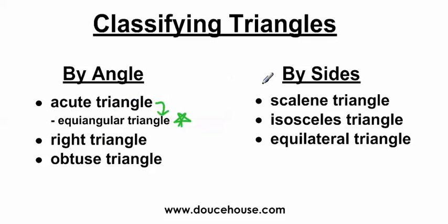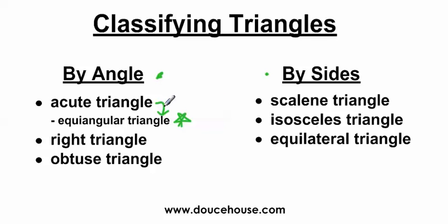Every triangle in the world and the universe can also be classified by sides. So we have a scalene triangle, the isosceles triangle, and the equilateral triangle. When it comes down to the big scheme of things, every triangle can be classified by angle and by sides. So you can have an acute triangle that's an equilateral triangle, or a right triangle that's also a scalene triangle. If classifying by angle, it's one of those three types; if by side, it's one of these three types; and you can use both together.